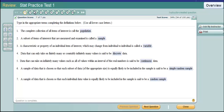A sample of data that is chosen so that each subset of data of appropriate size is equally likely to be included in the sample is said to be a simple random sample. And a sample of data that is chosen so that each individual value is equally likely to be included in the sample is a random sample.